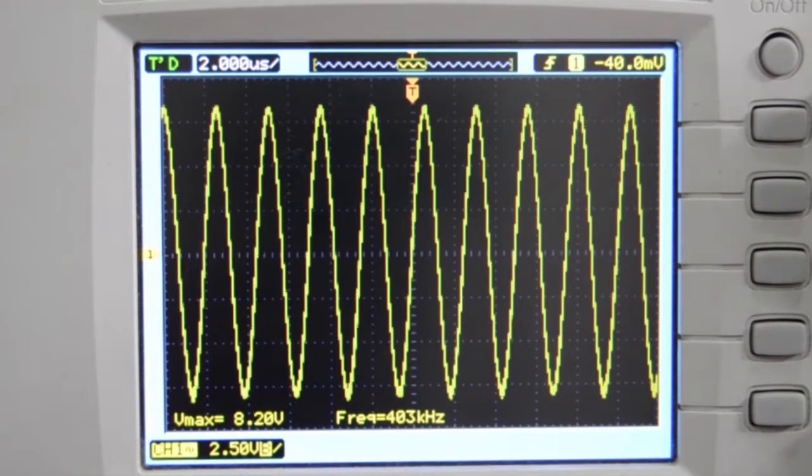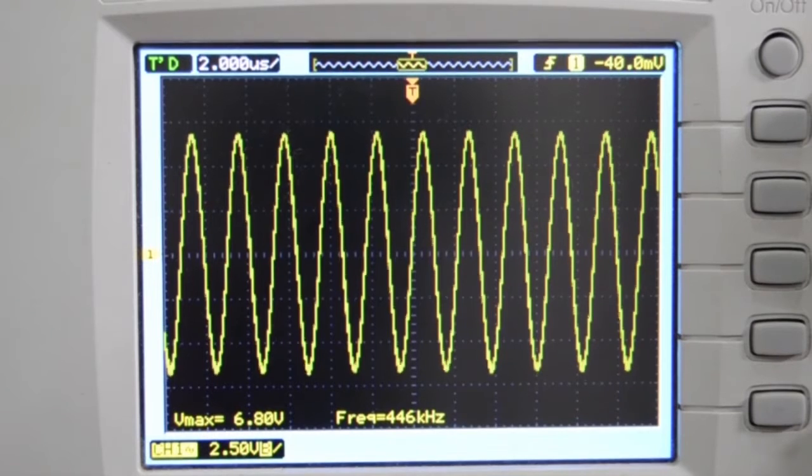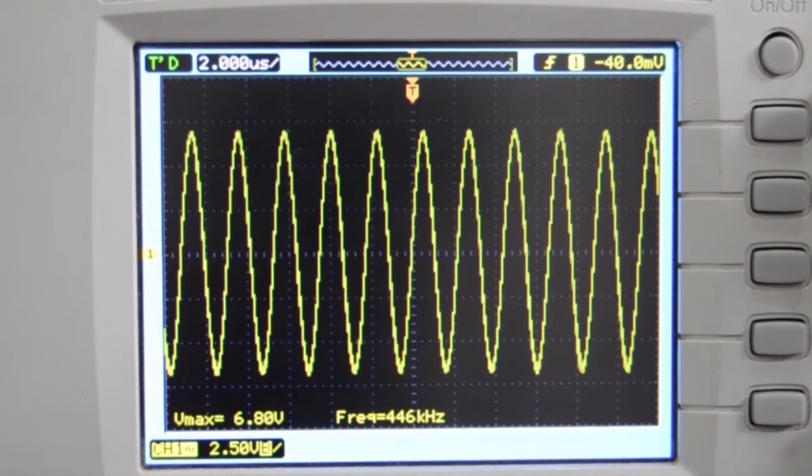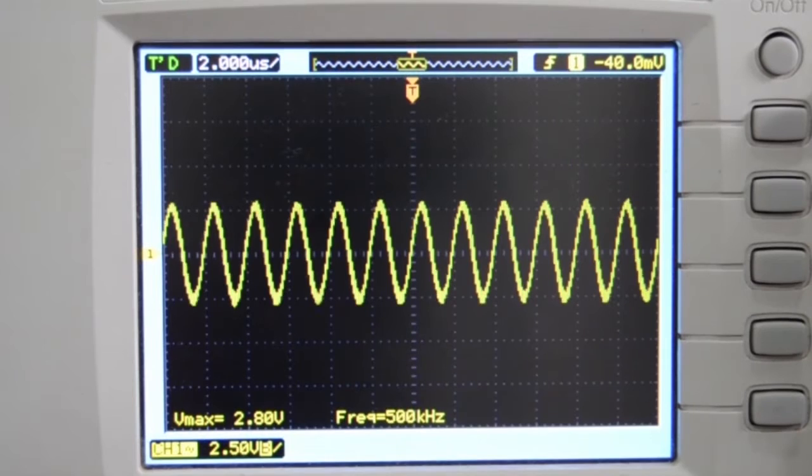Now we change the input signal frequency to 455 kHz. We get the VMAX as 6.8V. We change the input signal frequency to 500 kHz. And VMAX decreases. Thus the gain decreases. The new VMAX is 2.8V.